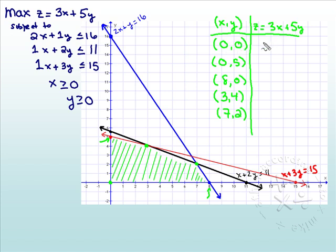We'll put in 0 in for x and 0 in for y. So we'll have 3 times 0 plus 5 times 0 is 0. We'll do the same thing for (0, 5). 3 times 0 is 0, 5 times 5 is 25. At (8, 0), 3 times 8 is 24 plus 0 more is still 24. At (3, 4), 3 times 3 is 9 plus 4 times 5 is 20, so this gives us 29. And lastly, 3 times 7 is 21 plus 5 times 2 is 10, which is 31.